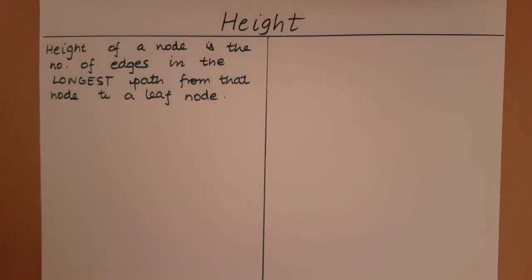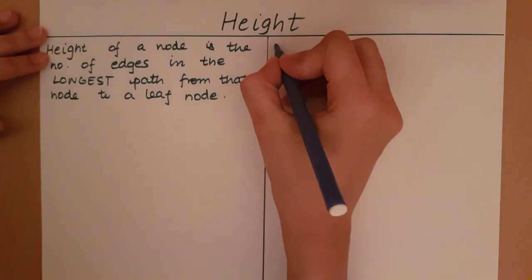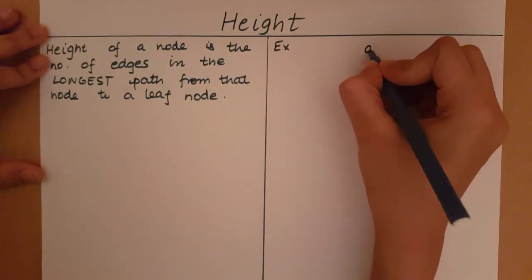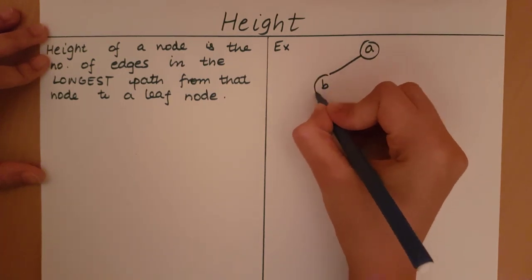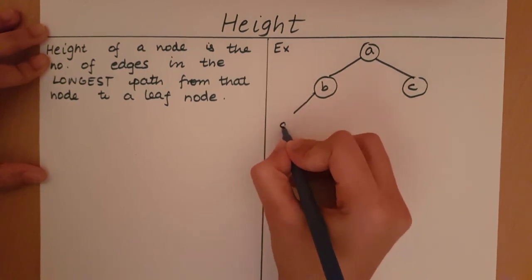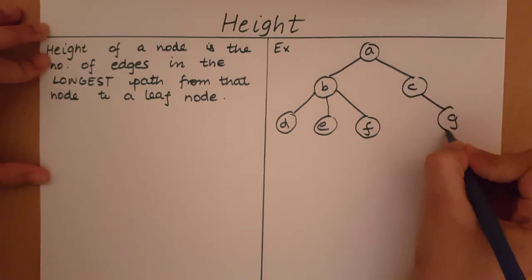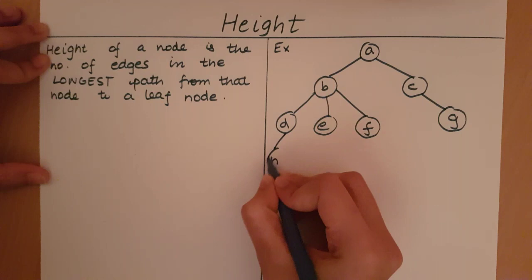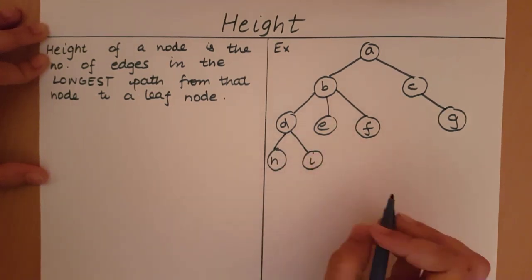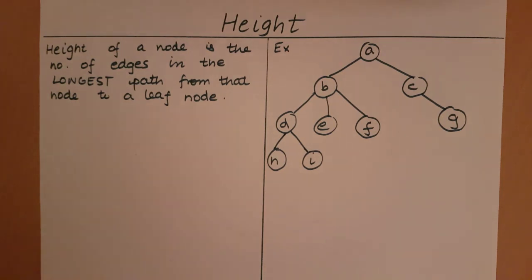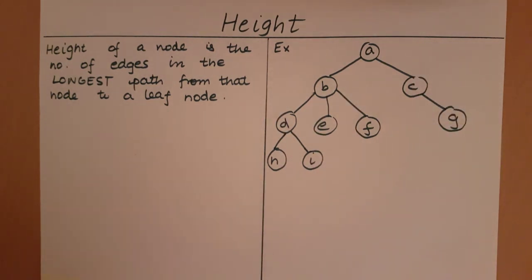Let's see if we can calculate the heights of all the nodes in an example. So let's say this is the tree I have. My aim in this example is going to be to find the height of all of these nodes — the nodes from A all the way till I. The first thing I must do is determine which nodes are going to be the leaf nodes.